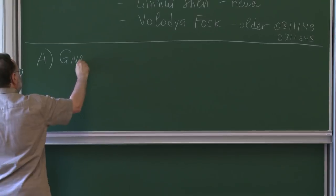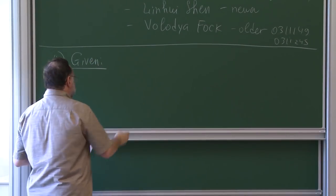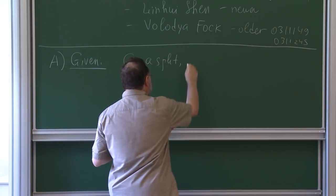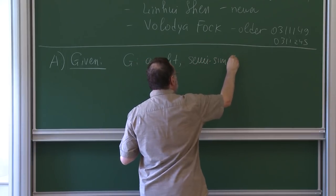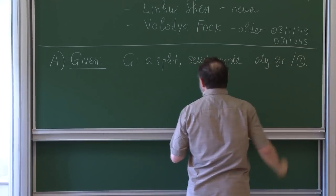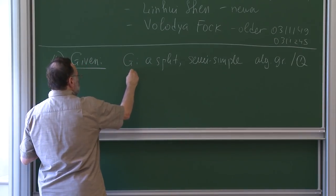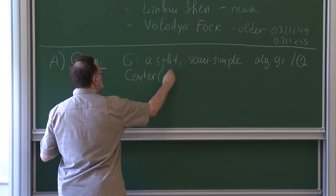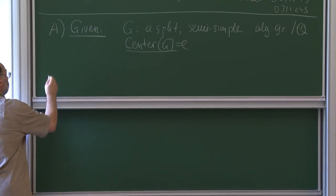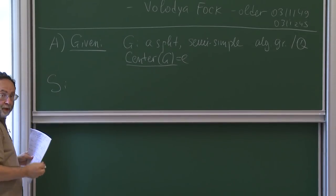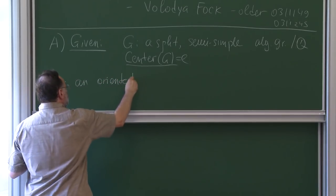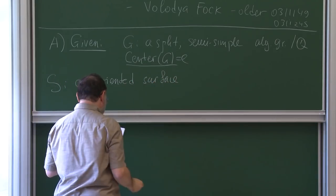We are given the following data. First of all, G is a split semi-simple algebraic group over Q. Mostly it will be adjoint, so we usually assume that the center of G is trivial, and that usually plays an important role. Secondly, we have S, which is an oriented surface with punctures.